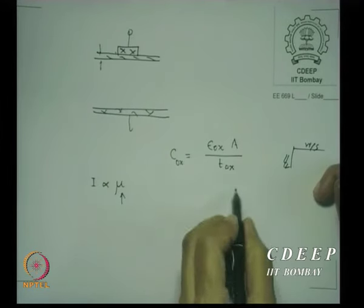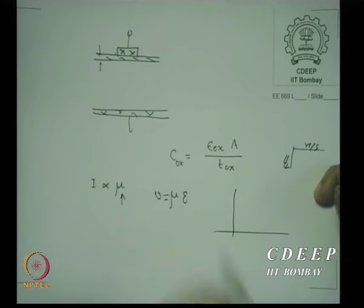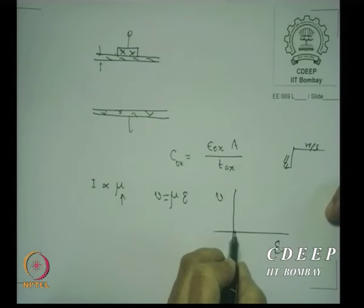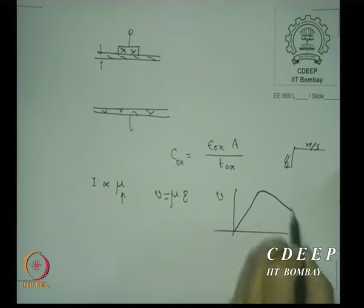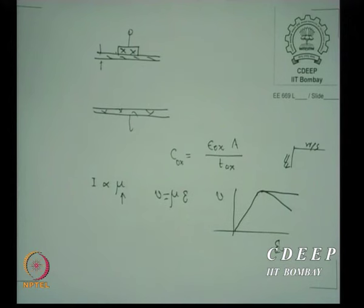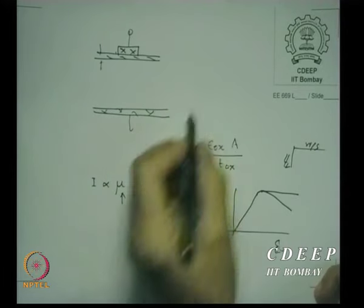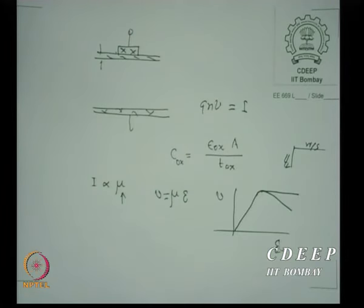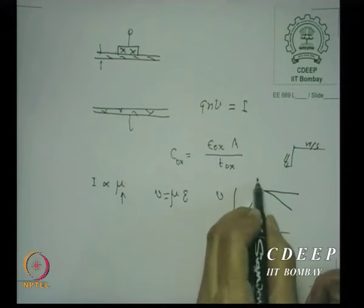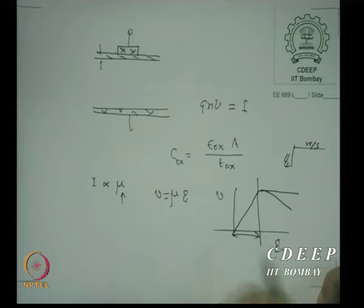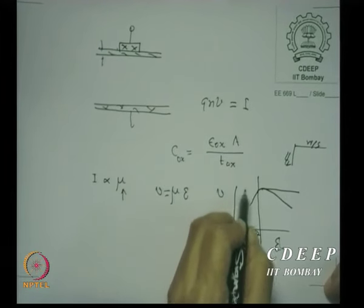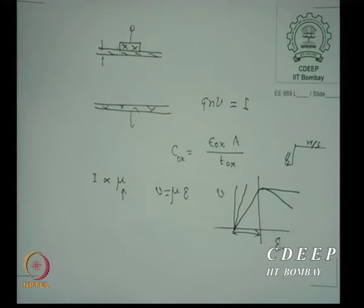Velocity v = μ × E, but in reality most semiconductors show velocity saturation — after a certain electric field, velocity and current saturate regardless of further field increase. To improve current at high fields, the mobility slope must remain high. Intel and others found that strained silicon germanium in the source/drain gives compressive strain, improving hole mobility in p-channel devices.